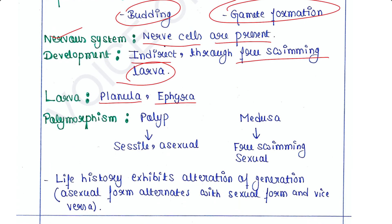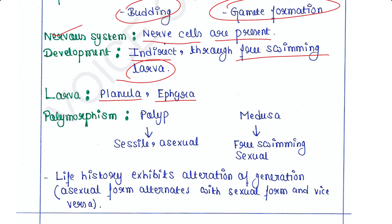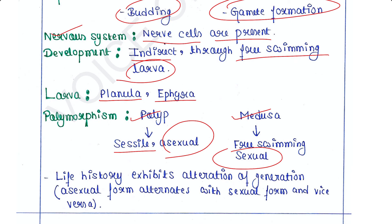Polymorphism: different types or forms are present. The polyp form is the asexual form — they undergo asexual reproduction and are sessile, meaning they are fixed and cannot move. The medusa is the sexual form — they undergo sexual reproduction and are free-swimming.